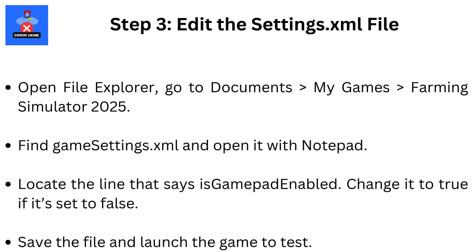Step 3: Edit the settings.xml file. Open File Explorer, go to Documents, then My Games, then Farming Simulator 2025. Find GameSettings.xml and open it with Notepad. Locate the line that says 'isGamepadEnabled' and change it to True if it's set to False. Save the file and launch the game to test.